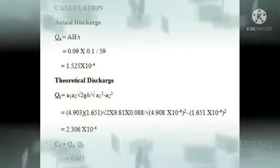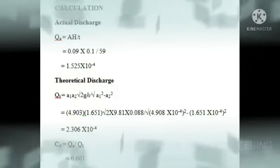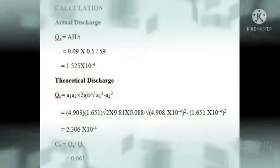Actual discharge can be calculated by the formula Ah by t, and the theoretical discharge can be calculated by the formula A₁A₂√(2Gh) by √(A₁² minus A₂²). And the coefficient of discharge value is being calculated as 0.661.